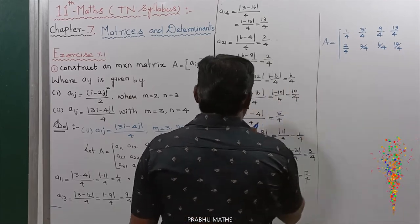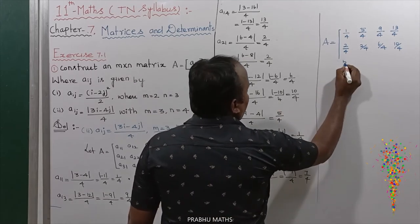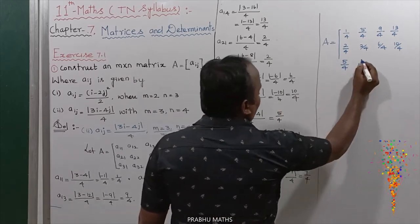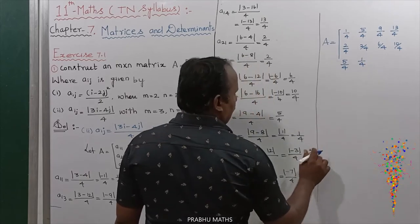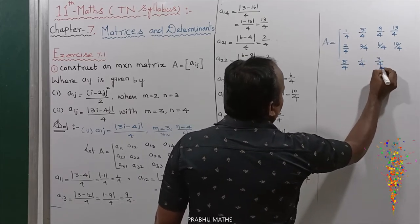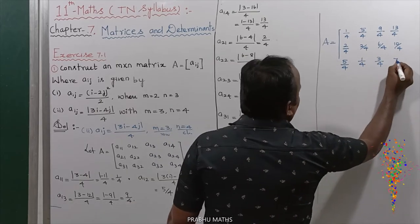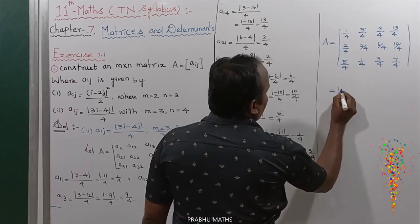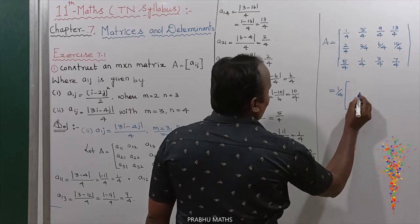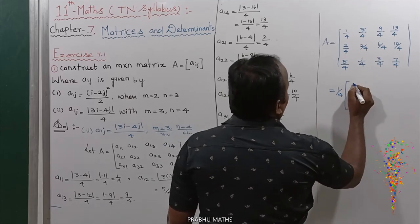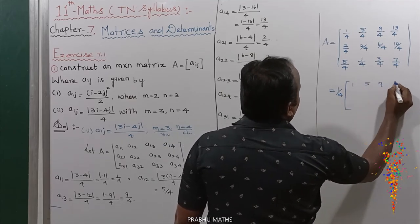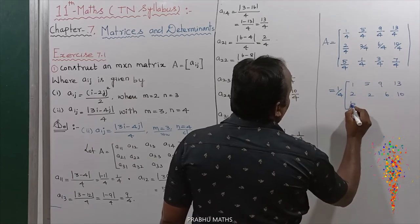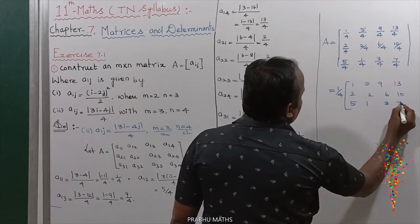The third row values: first is 5 by 4, next is 1 by 4, next is 3 by 4, and last is 7 by 4. Taking out the common value 4, the matrix equals 1 by 4 times the matrix with entries: row 1: 1, 5, 9, 13; row 2: 2, 2, 6, 10; row 3: 5, 1, 3, 7.